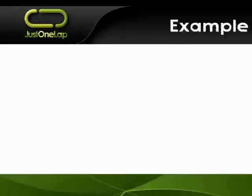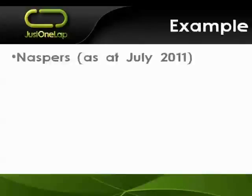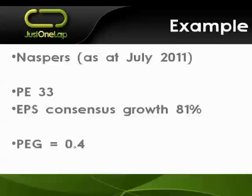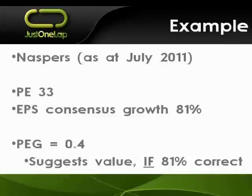Let's look at some examples. First one is Naspers — these are data as of this morning. We've got a price earnings on Naspers of 33, which is a big number. But the earnings per share consensus growth forecast is for 81% growth. If that be true, that gives us a PEG of 0.4 — 33 divided by 81 — which suggests that Naspers is offering great value at current prices if that 81% is correct. If Naspers were to only come in with 20% growth, their PEG would be above 1.